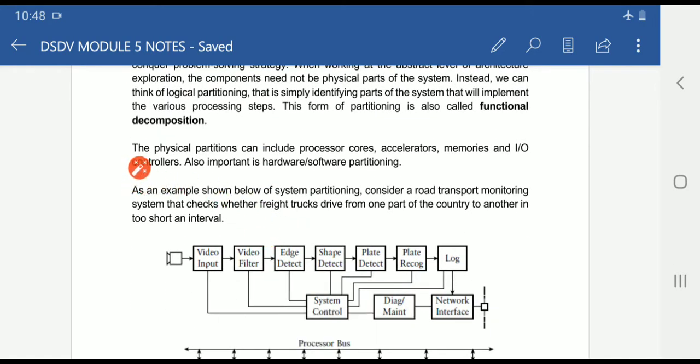Now, the physical partitions can include processor cores, accelerators to increase speed, memories and input-output controllers. Also important is hardware versus software partitioning, which we discussed in the previous video.